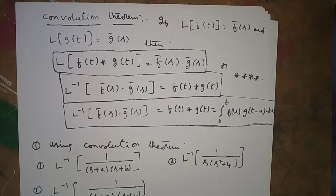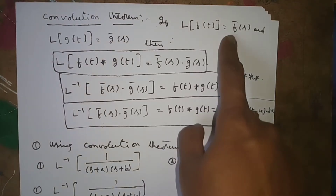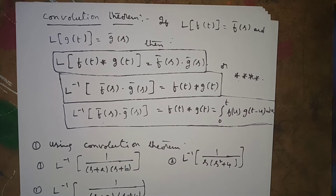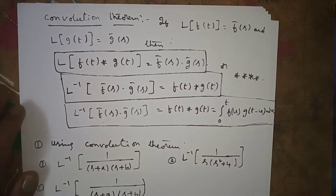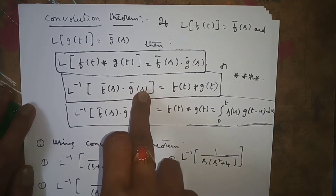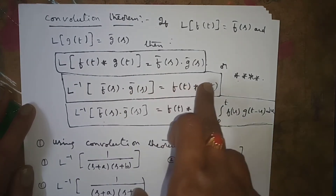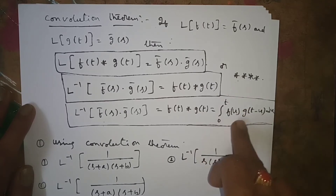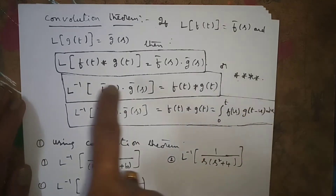The next topic is the Convolution Theorem in Inverse Laplace Transform. The statement is: if L of f(t) equals f-bar(s) and L of g(t) equals g-bar(s), then L of f(t) star g(t) equals f-bar(s) into g-bar(s). Sending L to the other side, L inverse of f-bar(s) into g-bar(s) equals f(t) star g(t), which equals the integral from 0 to t of f(u) into g(t minus u) du.